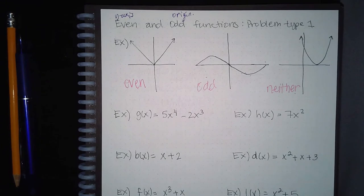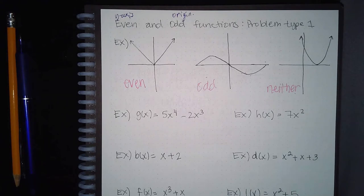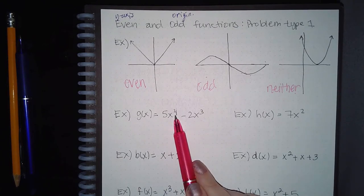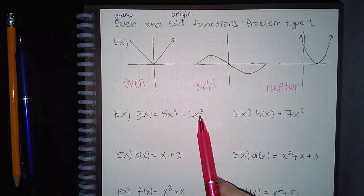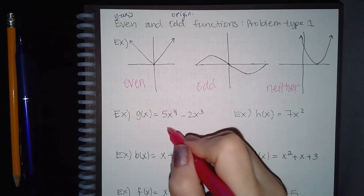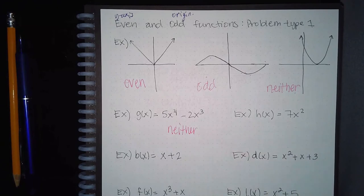How do you determine this when you're given a function instead of an image? All you have to do is look at the exponents. If all the exponents are even, you have an even function. If all the exponents are odd, you have an odd function. However, if you have a mix of even and odd exponents, the function is neither. For example, if you have an exponent of 4 (even) and an exponent of 3 (odd), that's a mix, so the entire function is neither odd nor even.